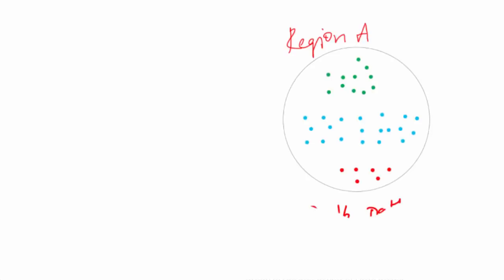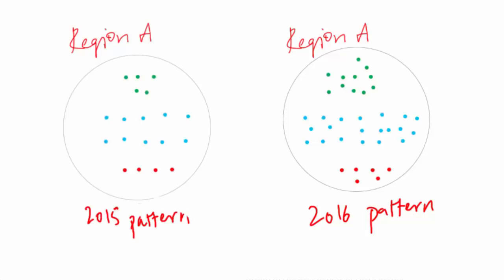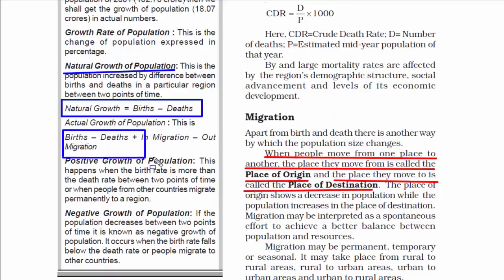In a region, the natural growth of population is the difference between births and deaths in a particular region between two points of time. To find the actual growth of population, we also need to add and subtract the migrants. The formula is: births minus deaths plus in-migration minus out-migration. We add those who moved into the new place and subtract those who left.